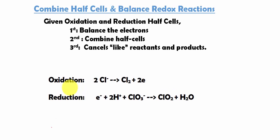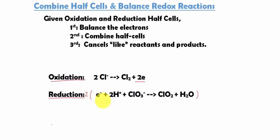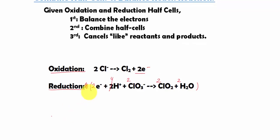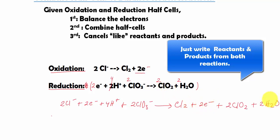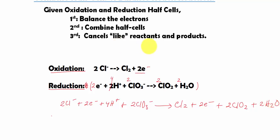Let's try a more challenging problem. Here the two half-cells are given in terms of oxidation and reduction, so we just follow the steps. Balance the electrons: the oxidation gives off 2 electrons, while the reduction gains 1 electron. So we multiply the reduction half-cell by 2, giving coefficients 2, 4, 2, 2, and 2 — and we can remove the explicit '2' on electrons. Now we have 2 electrons produced and 2 electrons consumed. Combining the half-cells, the reactants give us 2Cl⁻, and the products give us Cl₂ plus 2 electrons.